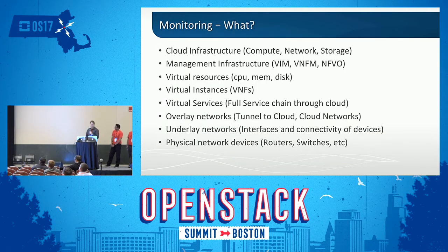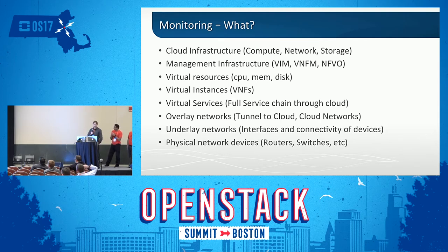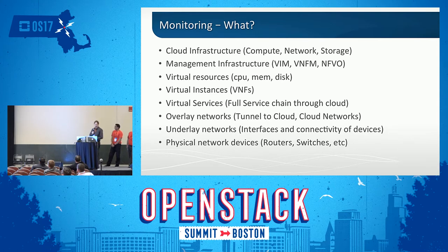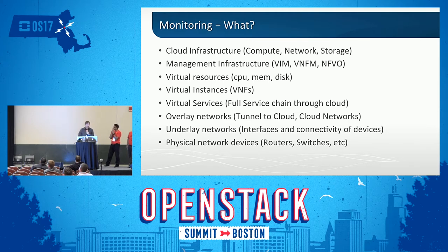So what do we need to monitor? We've got the business-as-usual type information, like the servers and network gear that provide your underlay. You have the cloud applications provisioning in the NFV infrastructure — your OpenStack services, your orchestrators, and those sorts of things. And you have the VNFs themselves, which are providing your services. You need to make sure they're running and functioning properly across all the different locations providing your service.